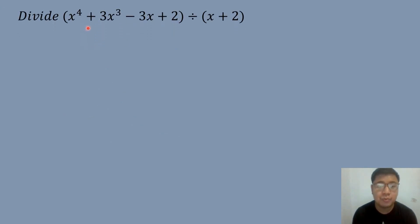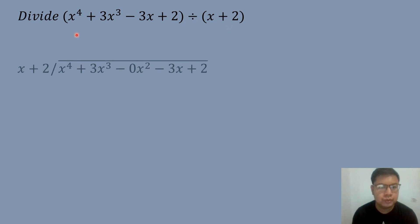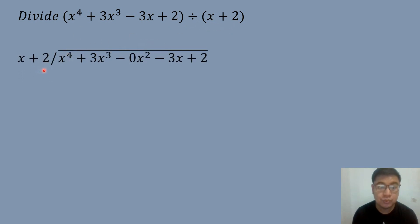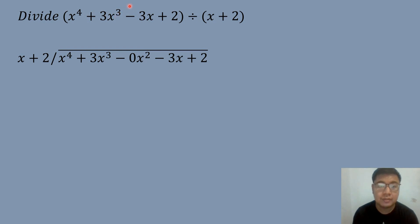So let's have our second example. Divide X to the fourth power plus 3X cubed minus 3X plus 2, divided by X plus 2. So we have divisor X plus 2 dividing into the dividend X to the fourth power plus 3X cubed. We will write 0X squared in this position because the second degree term is missing in the dividend — we have fourth degree, third degree, and second degree is missing — so we insert 0X squared between the third power and the first power terms.